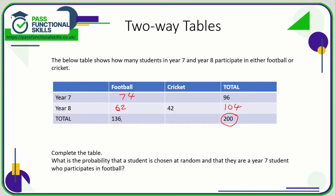If we know that the total for football is 136 out of a grand total of 200, then we can work out the cricket total as well. That would be 200 takeaway 136, which is 64. And if the total for cricket is 64, of which 42 were in year eight, then the rest are in year seven — so that is 22. So just by logic, we've now completed the table.